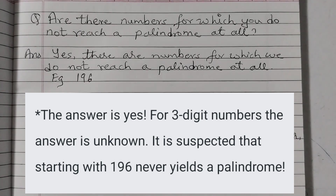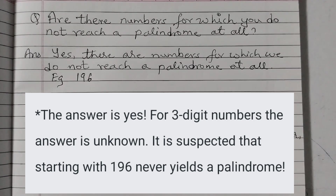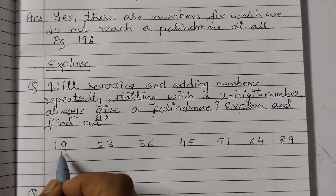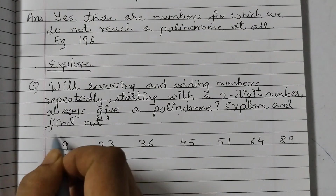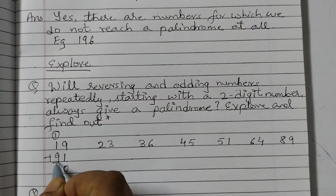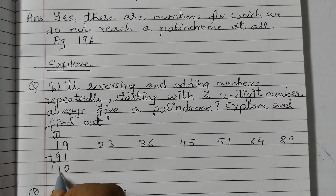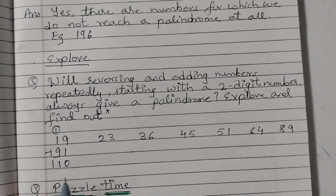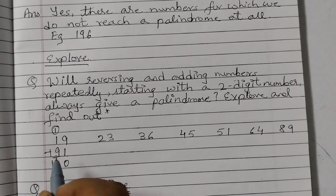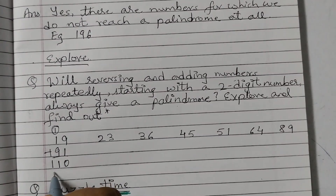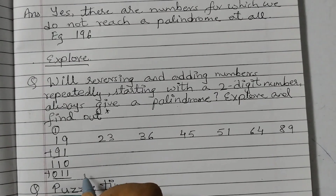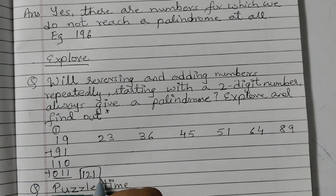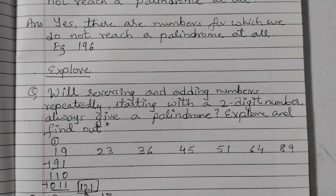We will explore using these numbers. Starting with 19: reverse is 91. 9 plus 1 is 10, carry 1 — giving 110. Not a palindrome, so reverse to get 011 and add: 110 plus 011 gives 121, which is a palindrome.